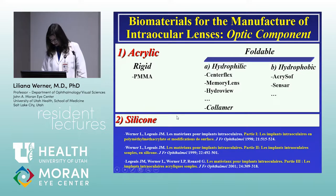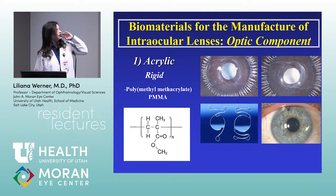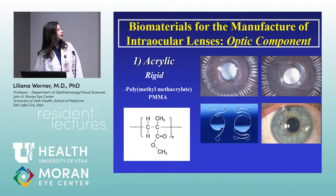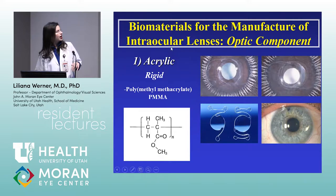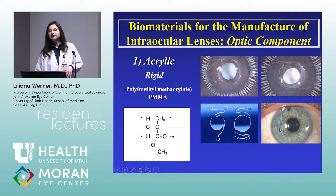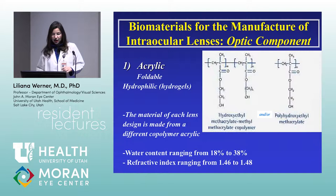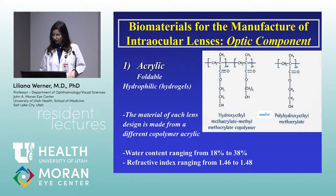PMMA lenses are mostly still used in developing countries. You have posterior chamber lenses placed in the capsular bag or sulcus, anterior chamber lenses made of PMMA, and iris-fixated intraocular lenses made of PMMA. Now for foldable acrylics: hydrophilic acrylic materials are also known as hydrogel materials. Although there is a general formula for how they are made, each hydrophilic acrylic lens is actually a slightly different copolymer.